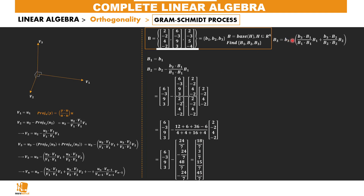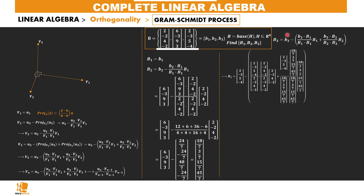Now let's find B3. For B3, we have B3 minus the projection of B3 on B1, plus the projection of B3 on B2. This gives B3 equals B3 minus (B3 dot B1 divided by B1 dot B1) times B1, plus (B3 dot B2 divided by B2 dot B2) times B2, where B1 and B2 are the vectors found previously. Applying this formula gives us the final answer for B3.